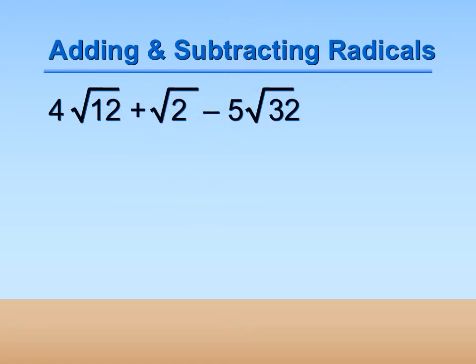Let's look at this problem: 4 square roots of 12 plus the square root of 2 minus 5 square roots of 32. None of those have the same radicands — we have a 12, a 2, and a 32. But those aren't simplified. 32 can be simplified and 12 can be simplified, so it's possible that some of those could be combined once we simplify them first.